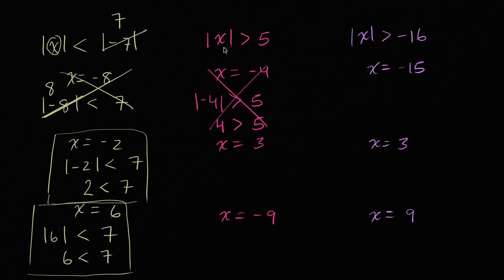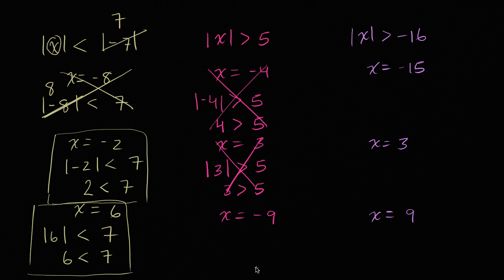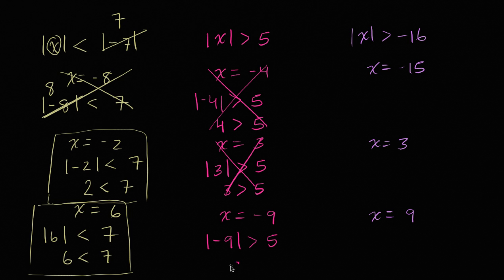Now x equals 3. Everywhere we see the x, replace that with a 3. The absolute value of 3 — is that greater than 5? The absolute value of 3 is just 3. So is 3 greater than 5? No, 3 is less than 5. Finally, if x equals negative 9, the absolute value of negative 9 needs to be greater than 5. The absolute value of negative 9 is just going to be positive 9. Is 9 greater than 5? Well, sure — 9 is greater than 5. So x equals negative 9 satisfies the inequality.